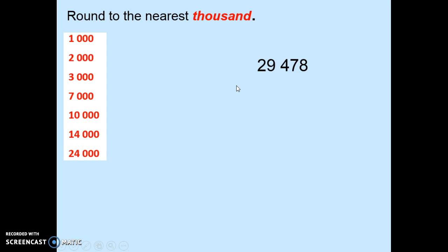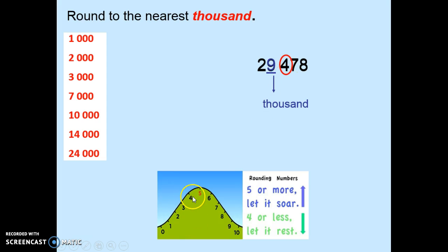As in the previous video, first underline the digit in the thousandth place. Circle the number immediately to its right. Using the rules of rounding, this number is four, so the number in the thousandth place stays the same. We replace all numbers after the thousandth place with zeros, and we leave numbers to the left of the thousandth place the same. Your answer is 29,000.